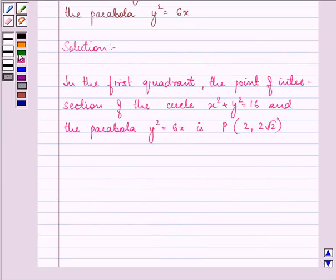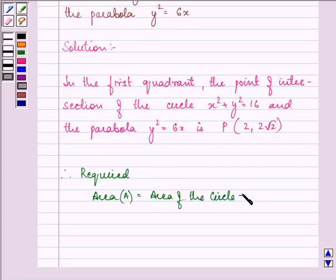We need to find the area of the circle which is exterior to the parabola. So the required area is the area of the circle minus the area of the circle interior to the parabola.